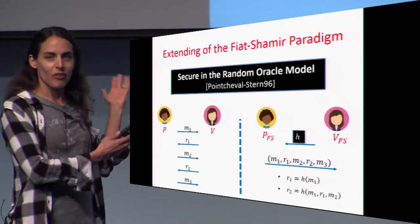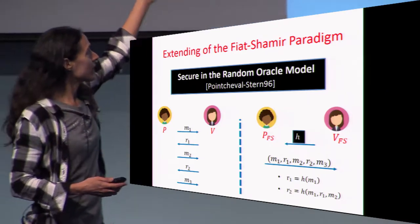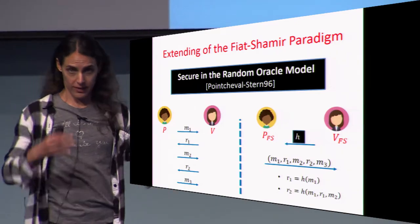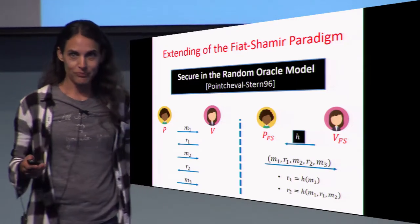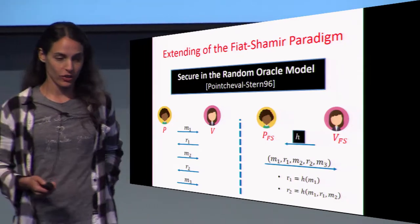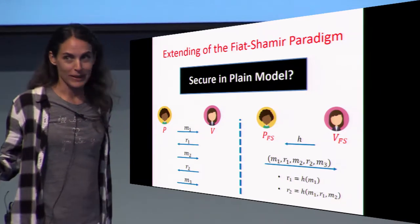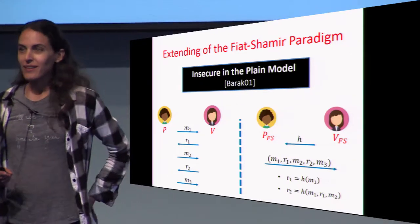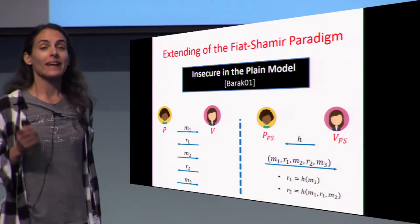One can show that the same kind of idea from Pointcheval-Stern can be used to argue that this extended paradigm is secure in the random oracle model. If we model H as a random oracle, it is secure. But we still ask: is it secure in the plain model? In 2001, in a seminal work, Barak gave a negative result — he showed that it's insecure.